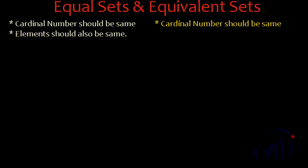In today's video we are going to talk about equal sets and equivalent sets. Both terms sound very similar but there is a slight difference between these two sets. Two sets are said to be equal sets if their cardinal number is the same and the elements of both sets should also be the same. Then only you can call two sets equal sets or identical sets.